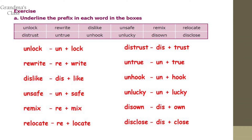Next exercise: underline the prefix in each word in the boxes. Unlock — 'un' is the prefix. Rewrite. Dislike. Unsafe. Remix. Relocate. Distrust. Untrue. Unhook — again 'un' is the prefix. Unlucky — 'un' is the prefix. Disown — 'dis' is the prefix. Disclose — again 'dis' is the prefix. Very easy exercise, you can do it very easily.